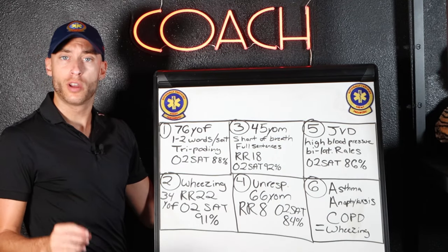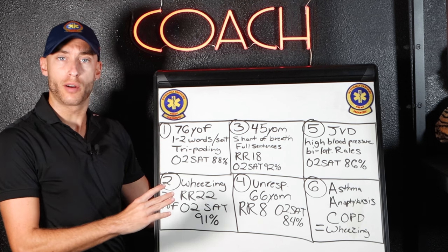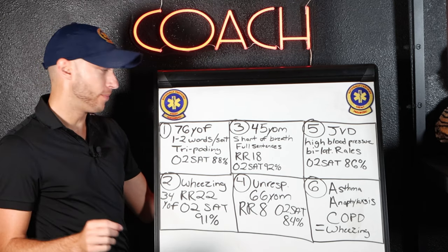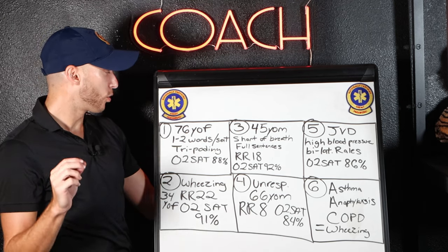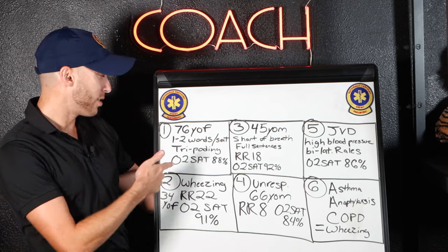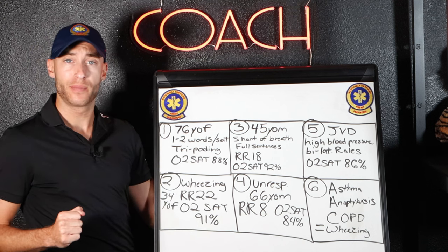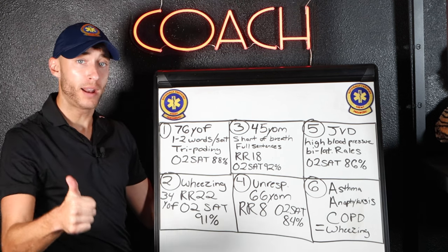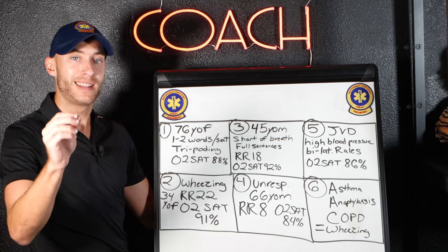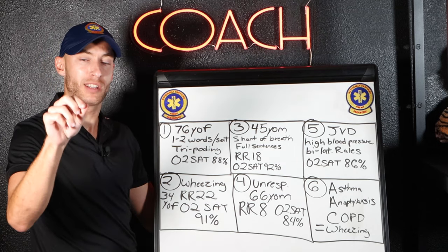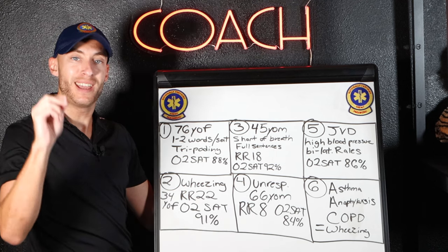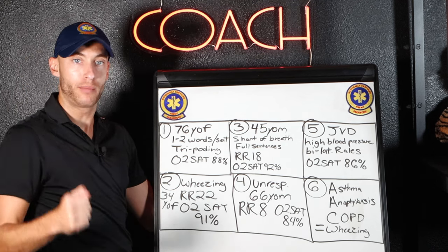Now here are our scenarios — five of them. Plus I've included a bonus mnemonic, so stay till the end. Scenario one: a 76-year-old female speaking in one to two word sentences, tripoding, with an O2 sat of 88%. Remember what I said — tripoding, low O2 sat, one to two word sentences. That's going to be your non-rebreather.